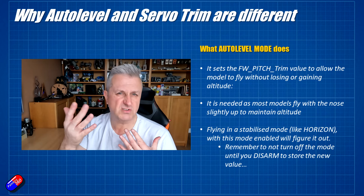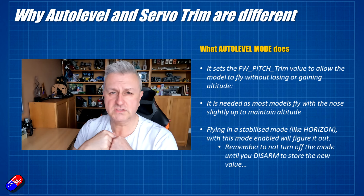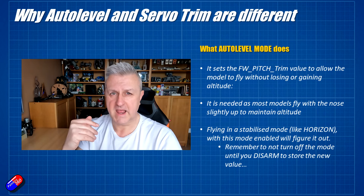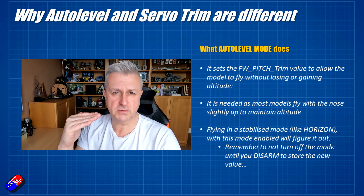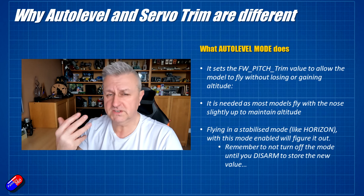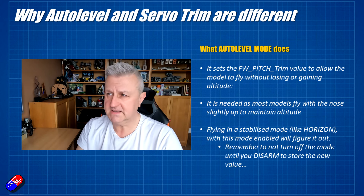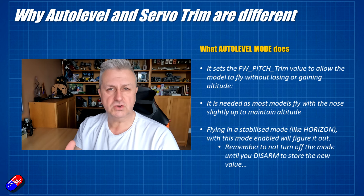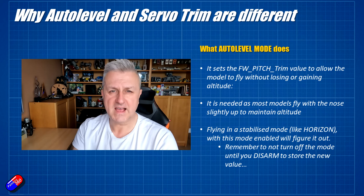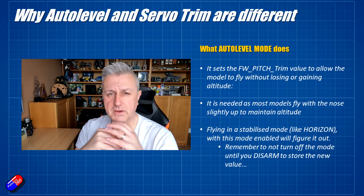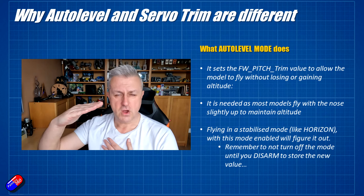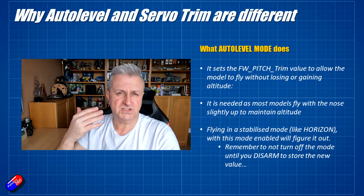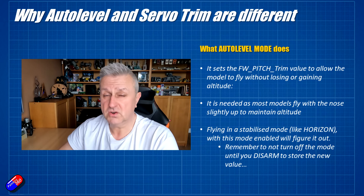Typically, you're going to be flying at your cruise throttle, you stick it into auto level, and iNav will figure that out. Then you land and disarm, turn off auto level, and that new value is stored. You can see it if you go into the CLI and type in 'get fw_pitch_trim' — you'll see it now has a discrete value. In theory, you shouldn't have to do that again. All that's doing is letting iNav know what the slight nose-up attitude needs to be so it doesn't lose or gain altitude when flying around at cruise throttle.